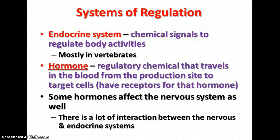The endocrine system is a second system of regulation, involving chemical signals to regulate body activities. It is mostly found in vertebrates, though a few hormones like pheromones exist in insects and other animals. A hormone is a regulatory chemical that travels in the blood from where it's produced to a target cell that has receptors for that hormone. Some hormones also affect the nervous system, and there is a lot of interaction between the nervous and endocrine systems — the nervous system has some control over the endocrine system, and vice versa.